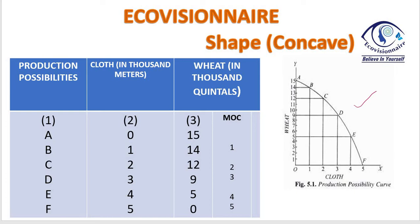The second feature is why the PPC is concave. You need to pay close attention to understand this. The PPC is concave to the origin — this shape here is concave. So why is it concave? It is concave because as we move from wheat to cloth, the sacrifice goes on increasing.